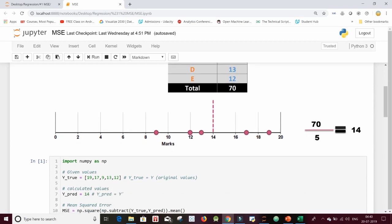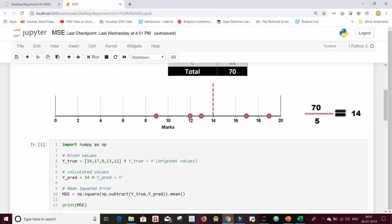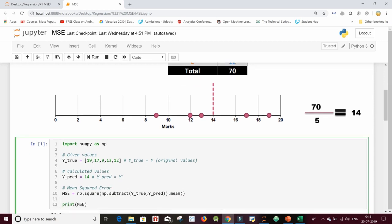So this means that I have taken the original values and formed a list. Now I see that the calculated value is 14. Because numpy supports broadcasting, it will take this number 14 and form a list out of it, that is 14, 14, 14, 14, 14, five times.